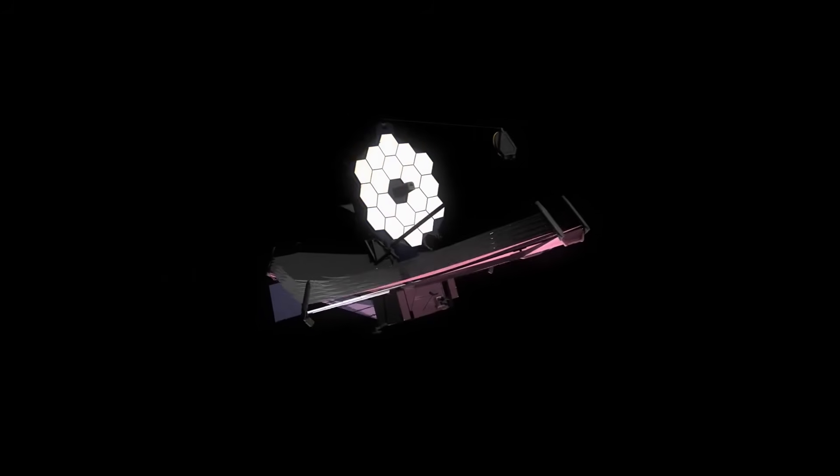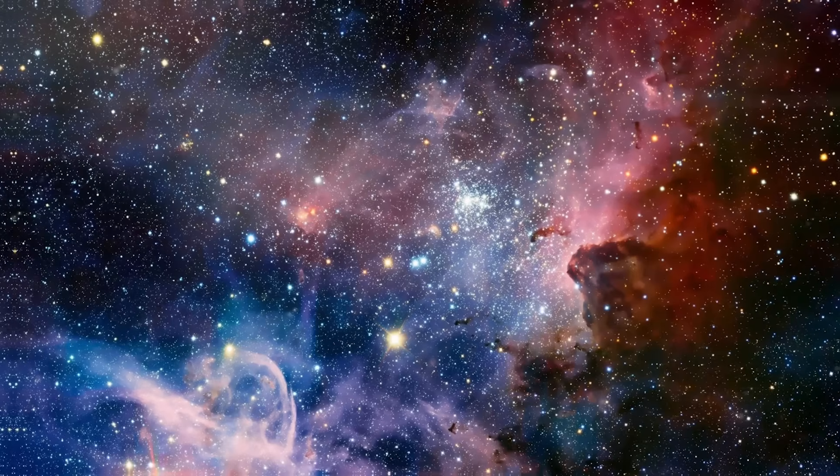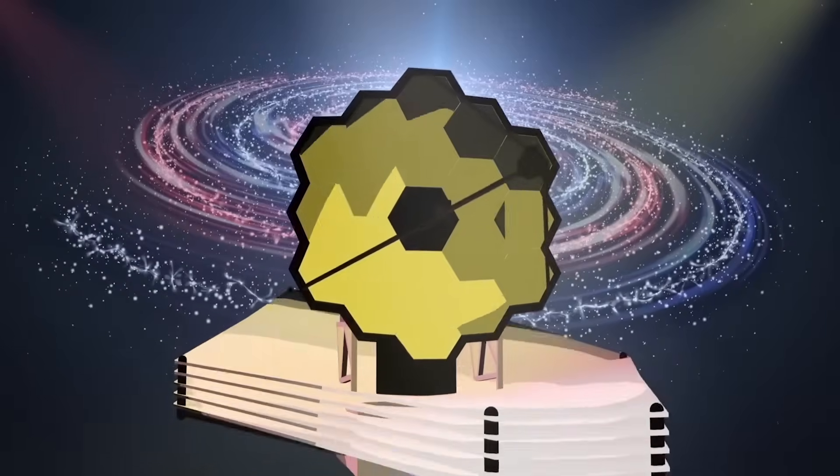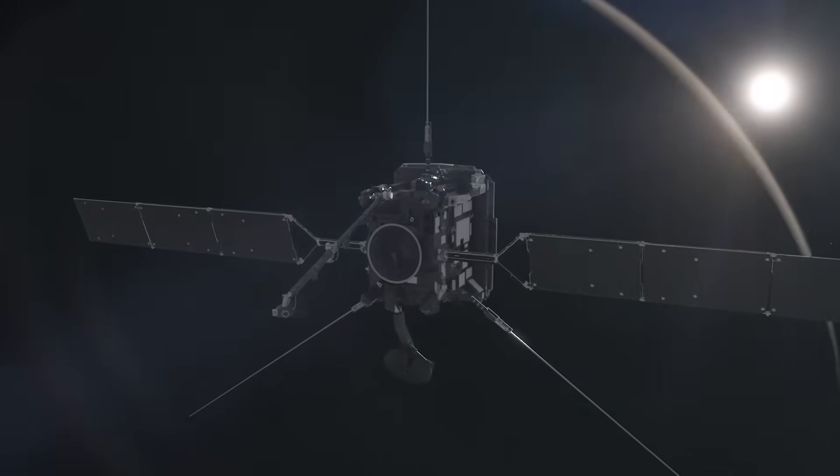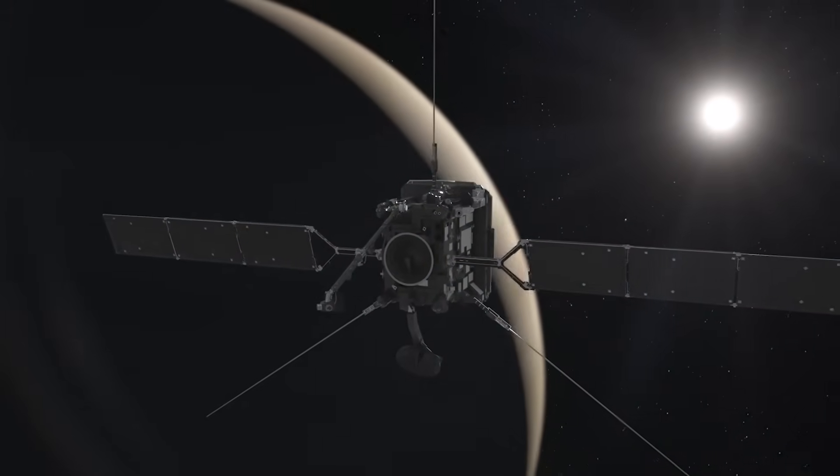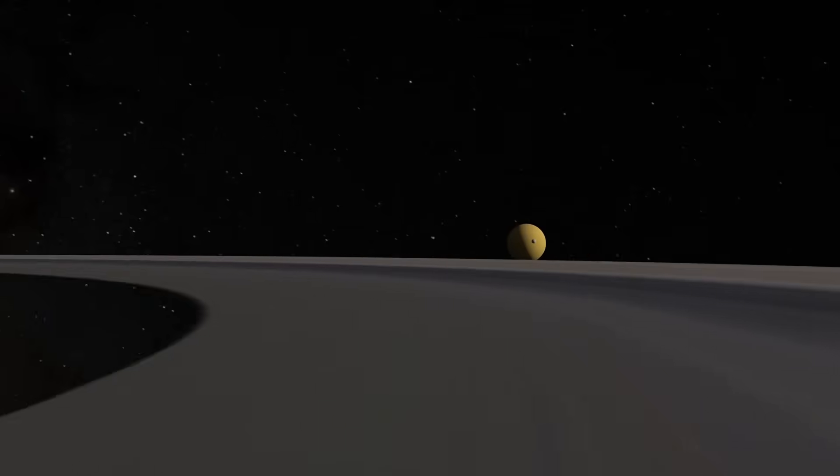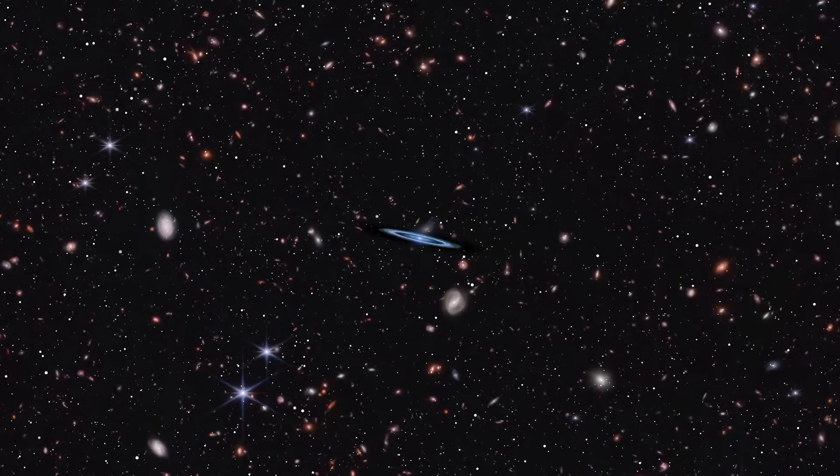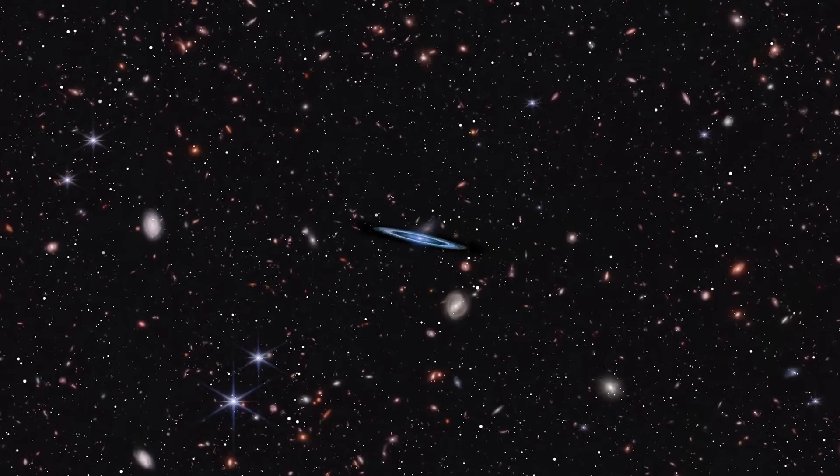Now, the James Webb Space Telescope has pierced that curtain, revealing cosmic structures and patterns of matter that date back to a time when the universe was less than 200 million years old. What Webb detected was not merely another faint galaxy or a distant quasar, but a complex region of space that appears to contain a dense, chaotic web of matter and energy unlike anything previously seen.